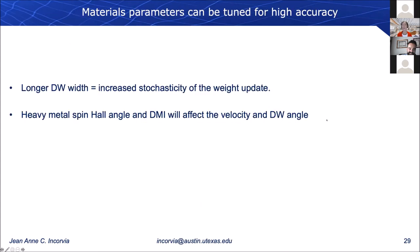There are materials parameters we can tune to further increase accuracy. For example, the domain wall length itself can be affected by materials parameters such as anisotropy and magnetic stiffness — increasing domain wall size can help increase the stochasticity of the weight update. The heavy metal spin Hall angle is another parameter; we assumed a modest spin Hall angle for tantalum as used in our devices. The DMI factor affects the velocity of the domain wall and its angle. There are many materials parameters to work with to further tune these magnetic devices for specific applications.